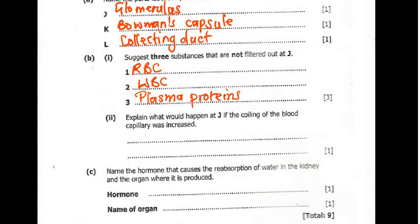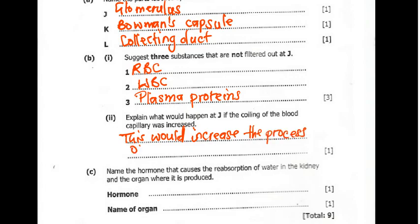Question 3B2 says explain what would happen at J if the coiling of the blood capillary was increased. So if at the glomerulus the coiling of the blood capillary was increased, this would increase the process of ultrafiltration.